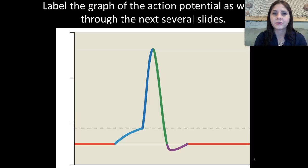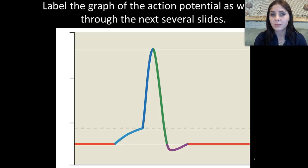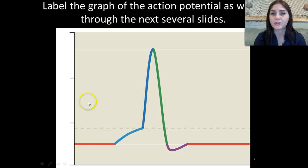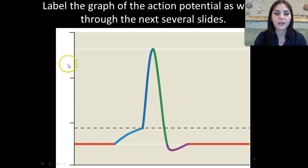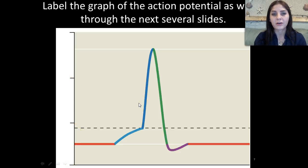Now I'm going to walk you through what happens at an action potential. Before we get started, I want you to pause this video and draw this graph on a completely separate sheet of paper. As we go along in the next couple of slides, label the graph and explain what's happening at each of the points. This point right here is going to be the resting stage, at negative 70 millivolts.